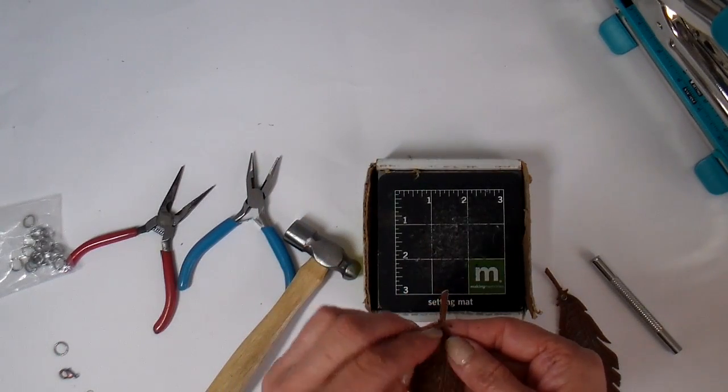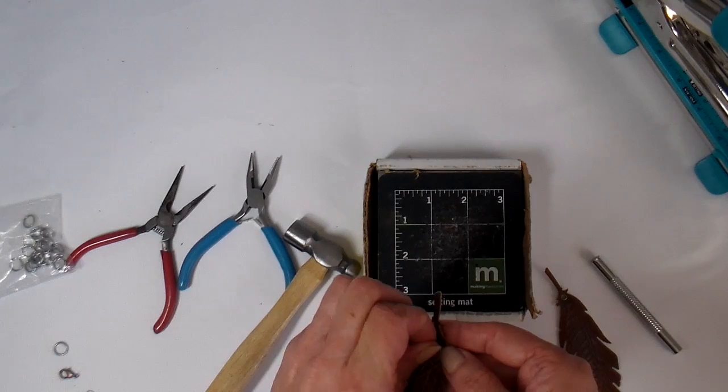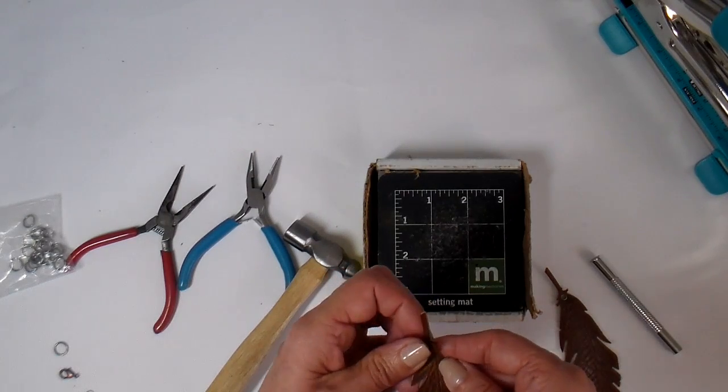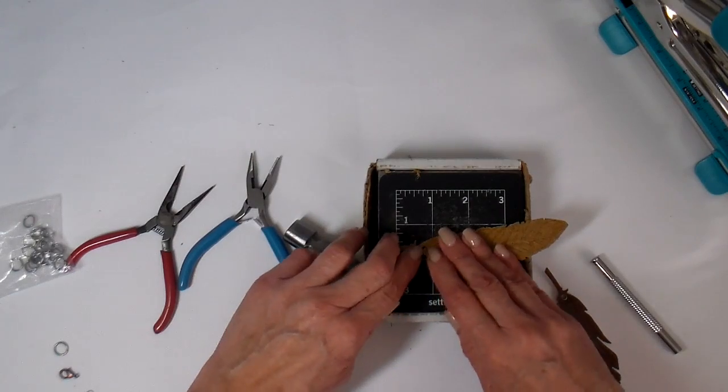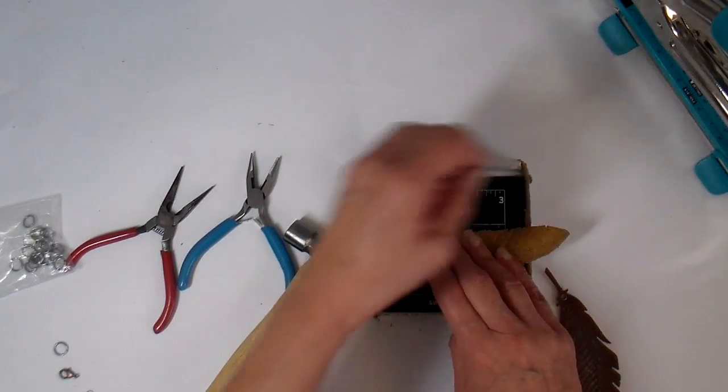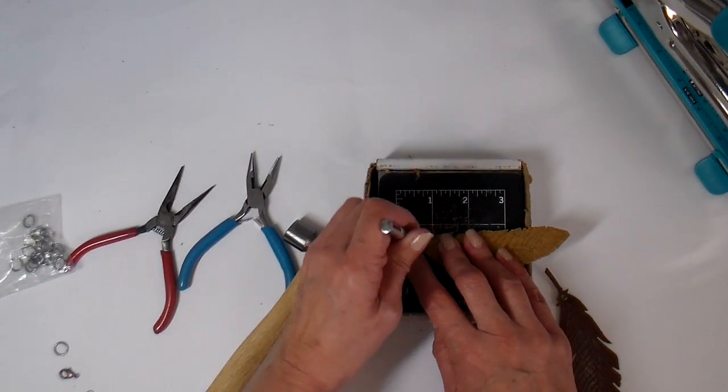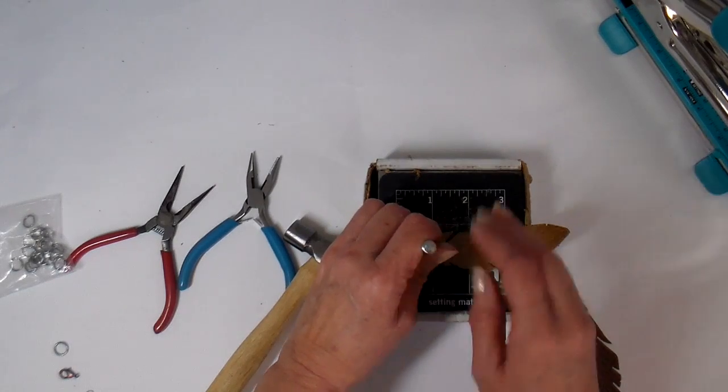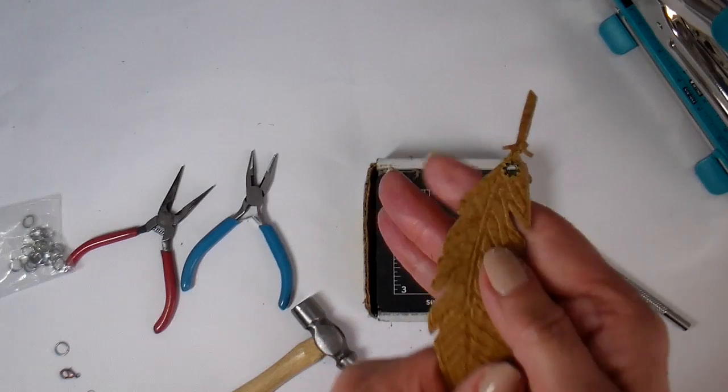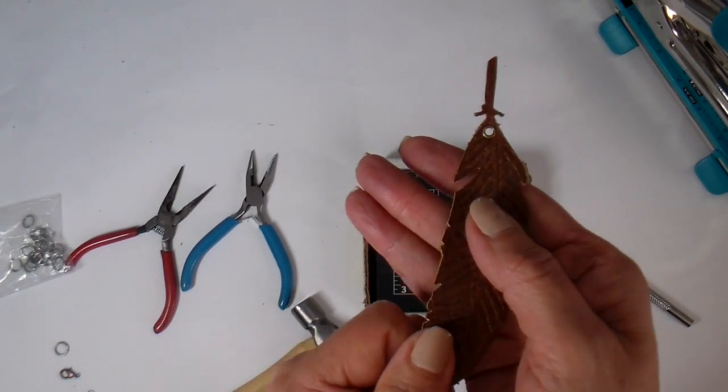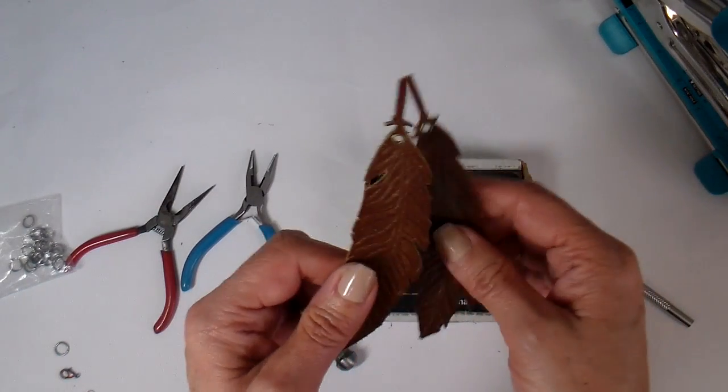One more here. Poking it through, putting the little setter tool on top, and giving it a little whack. There we go. Both of them have the little eyelets in place.